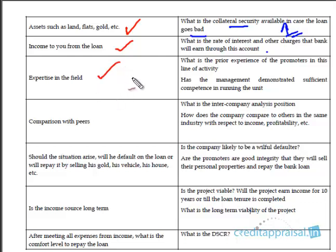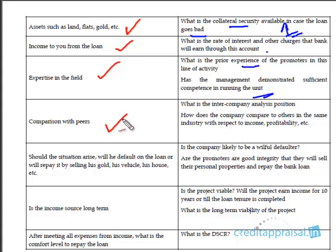For individuals, we assessed expertise and technical skills. For companies, we similarly ask: what is the company's expertise in this field? What is the prior experience of the promoters? Has the management demonstrated competence in running this unit? And just as we compared individuals with their peers, for companies we perform inter-company analysis — comparing profitability, income, and various parameters against industry peers.